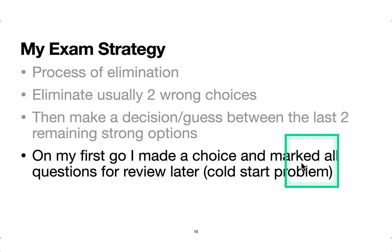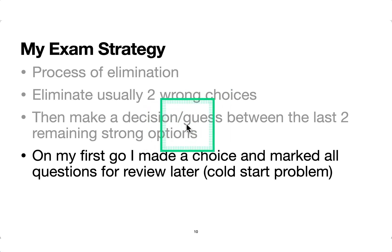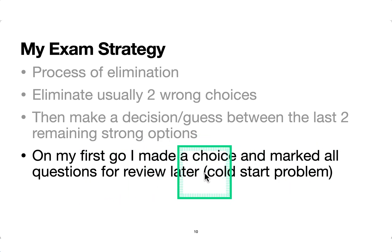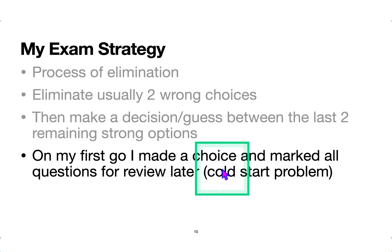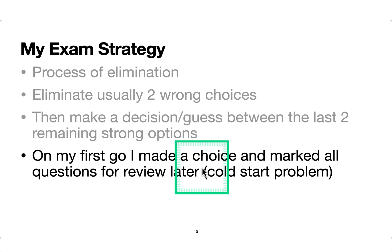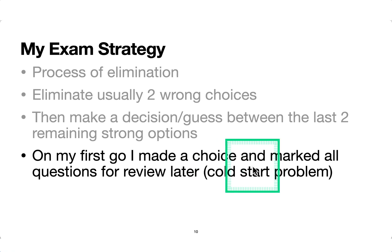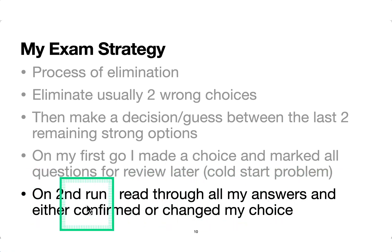On my first go through, I make a choice and mark questions for review later. When you start the exam, there's a cold start problem — as you come into the exam center and start looking at questions, you're not fully warmed up. So for the first 10 to 20 questions, I'll mark a lot of them for review so I can come back. Then on the second run, once I've gone through all 60 questions, I read through all my answers and either confirm or change my choice.